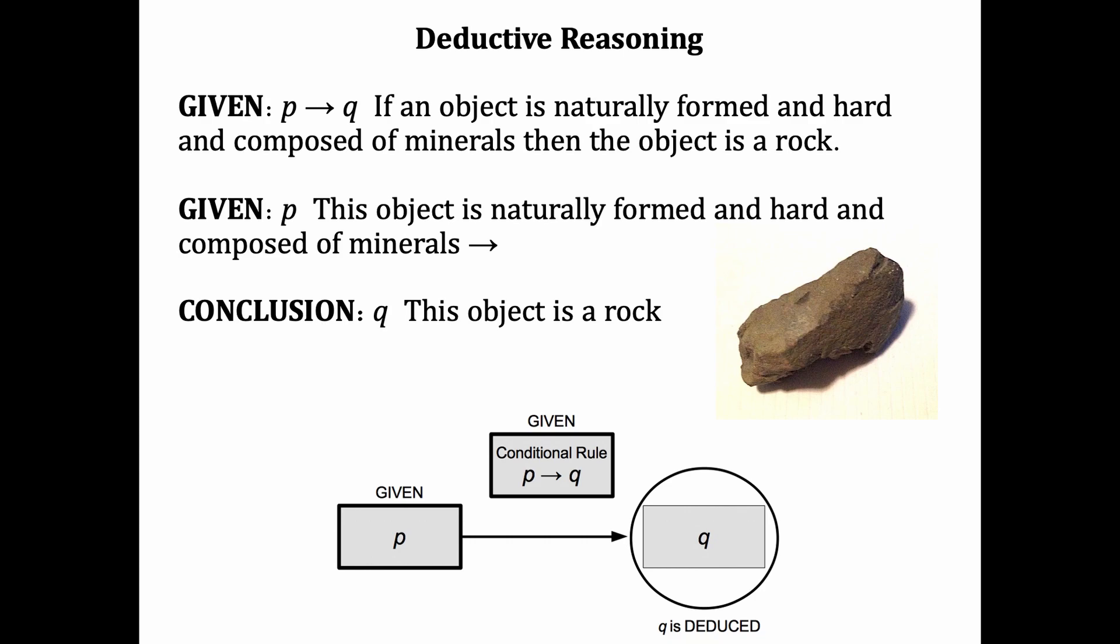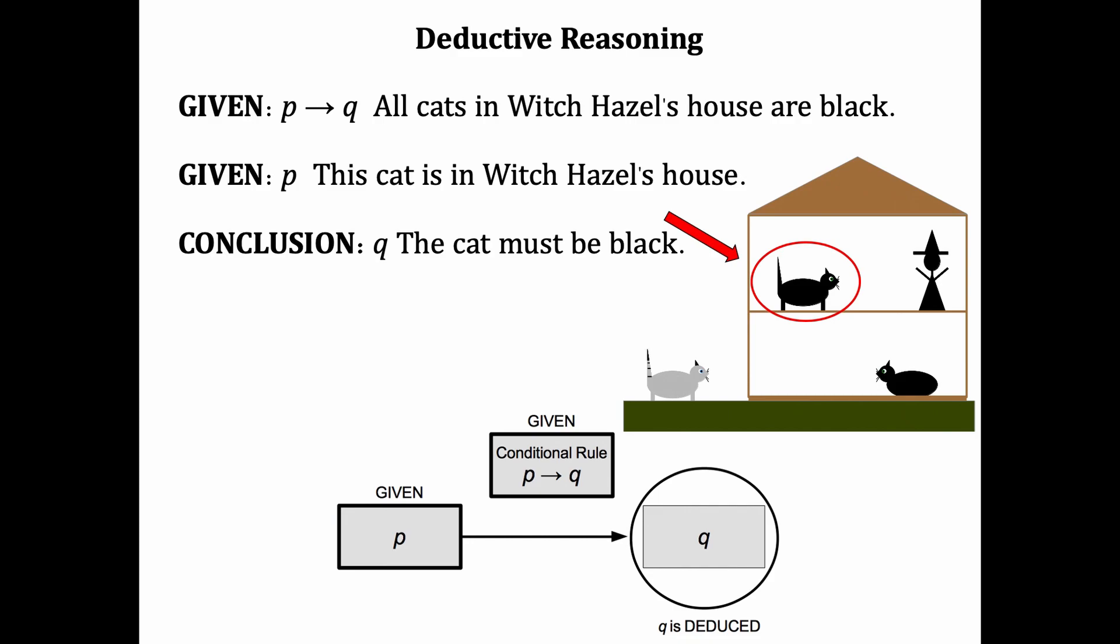Here's another example. Let's say that all cats in which Hazel's house are black. This is actually an if-then statement. If a cat is in which Hazel's house, then it is black. Would be another way to say it. Let's say that this particular cat is located in which Hazel's house. Can we form a conclusion using deductive reasoning? We can. The conclusion should be that the cat must be black. All cats in the house are black. The cat's in the house. We can conclude it must be black. There's no other way it could be.